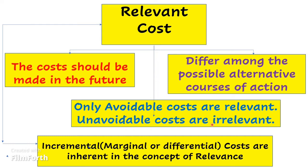Fourth, unavoidable costs are irrelevant. Unavoidable costs are those which have already been incurred — they are also known as sunk costs or committed costs. For example, if you are running a factory and have already paid rent for the past year, that rent is an unavoidable, sunk cost and is therefore irrelevant to any future decision making.